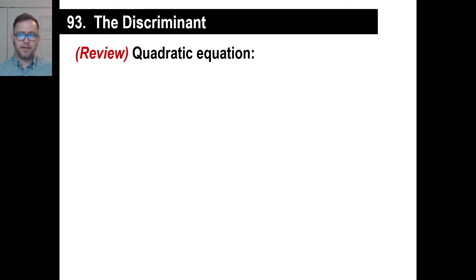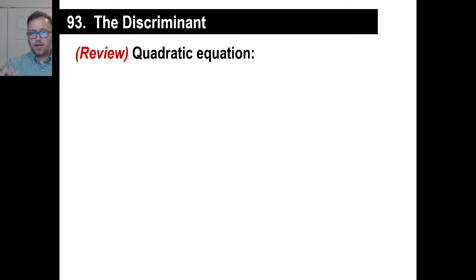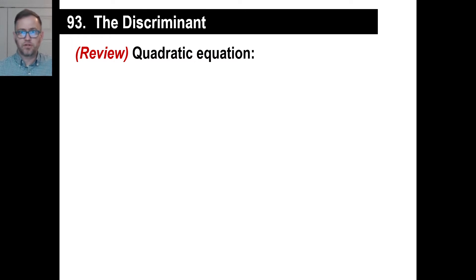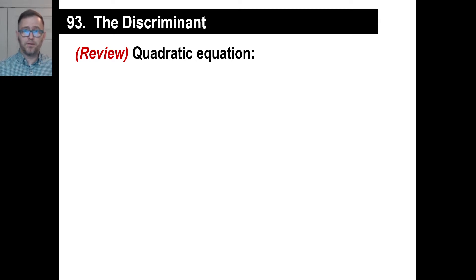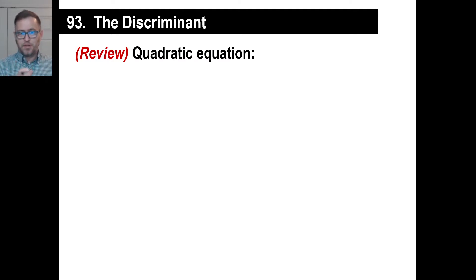A discriminant is something that discriminates. Discriminate is not a bad word — it's got this reputation of being, oh, you're discriminating. Well, you should discriminate. When you're choosing a husband or a wife one day, you better discriminate. If you're choosing a pair of shoes, you better discriminate. You look at one thing and look at the other and make a choice based on what you see, different aspects or possibilities or whatever.